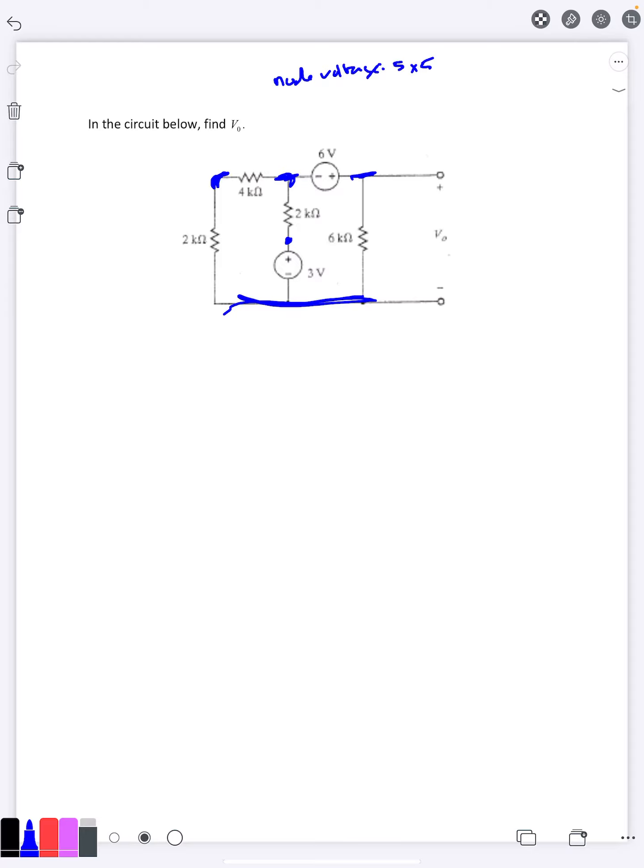That would get rid of a node, so make it four by four. Also, if I go ahead and pick one of these to be ground, say bottom here, I'll immediately know this is 3 volts, so that will eliminate things one more here.